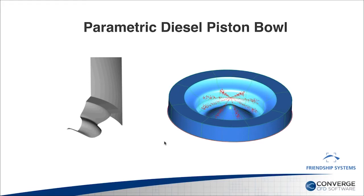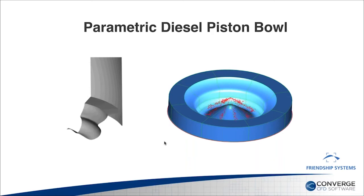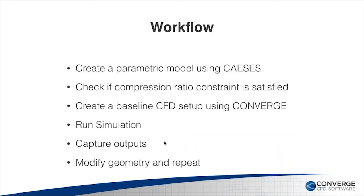Now that I've introduced Converge and Mattia has introduced CASES, I'll talk about the piston bowl optimization study. The primary objective is to demonstrate a proof-of-concept workflow. The first step is to identify geometric parameters for the optimization study. Once identified, we prepare the baseline CFD setup used for each design iteration. We then run simulations, gather important outputs fed back to the optimizer. The optimizer then changes the geometric parameters, creates a new geometry, and we repeat the entire process. Now I'll pass it to Mattia to provide details of the parametric piston bowl model.